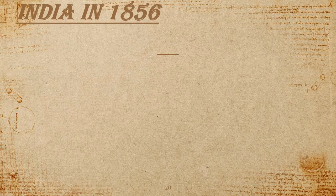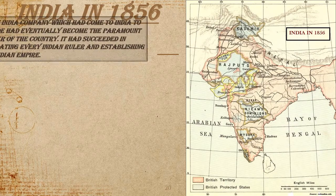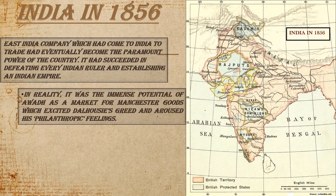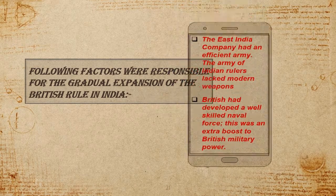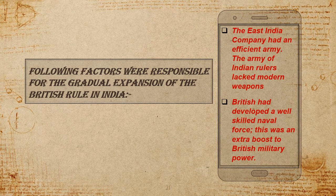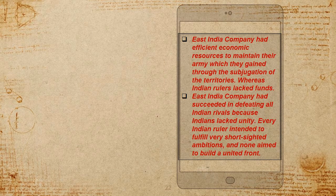By 1856, the English East India Company had brought the whole of India under its control. The parts of the country that were nominally under Indian rulers were effectively under the control of the British, who had eliminated all their rivals and established themselves as the paramount power in India. The factors responsible for the success of the British included an efficient army, while Indian rulers lacked modern weapons. The British had also developed a well-skilled naval force, which gave an extra boost to their military power. The East India Company had efficient economic resources to maintain their army, gained through the subjugation of territories, whereas the Indian rulers lacked funds.